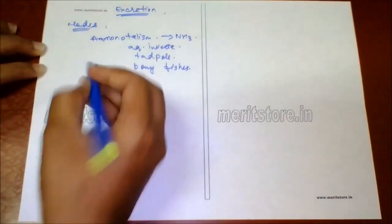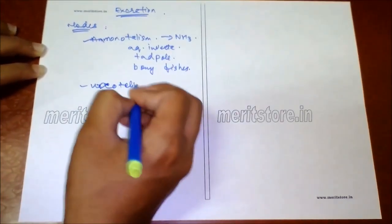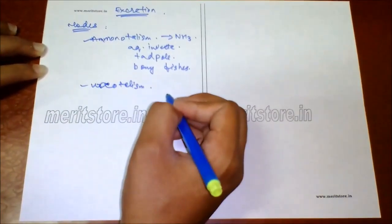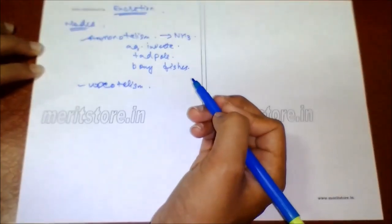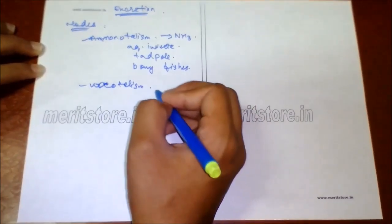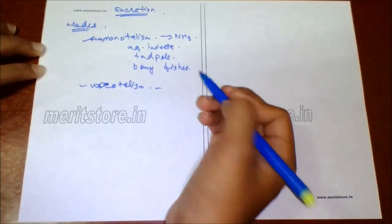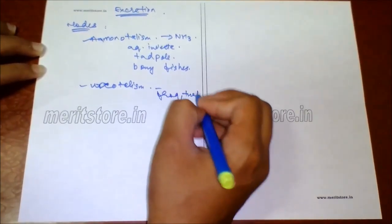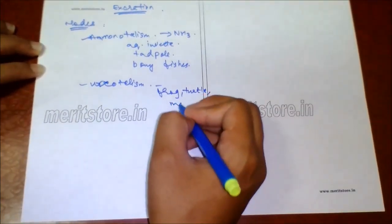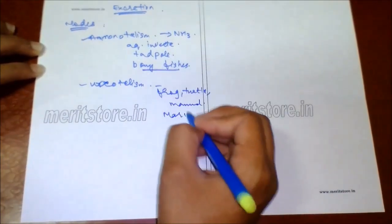Ureotelism: animals that secrete urea. Ammonia reacts with carbon dioxide to form urea, which is less soluble and less toxic, in liquid form. About 50 ml of water is required per gram of urea. It is seen in terrestrial animals like frogs, turtles, mammals, and marine bony fishes.